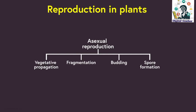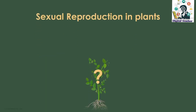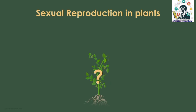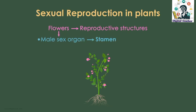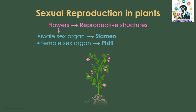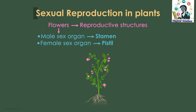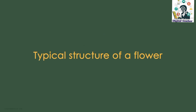But first of all, let's talk about sexual reproduction in plants. Plants undergo sexual reproduction using their flowers, which are their reproductive structures. The male part is called the stamen, while the female part of the flower is called the pistil. But how does this process occur? Let's try to understand this, but before that, let's look at the typical structure of a flower.